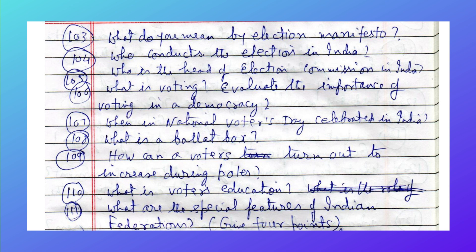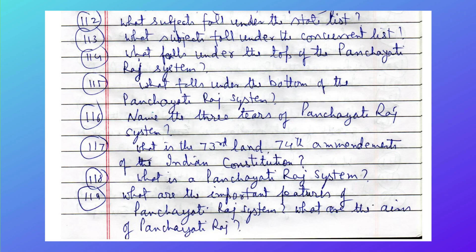What is a ballot box? How can voter turnout be increased during polls? What is voters' education? What are the special features of Indian federalism — give four points. What subjects fall under the State List and what subjects fall under the Concurrent List?